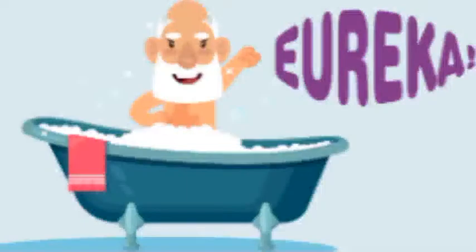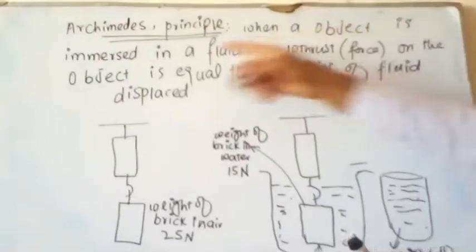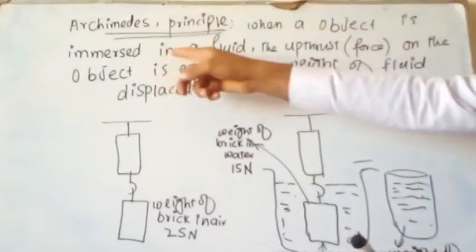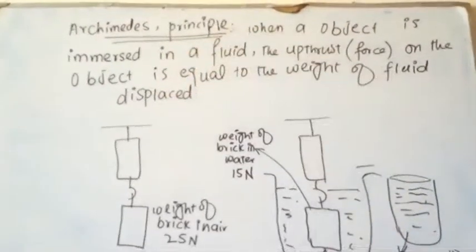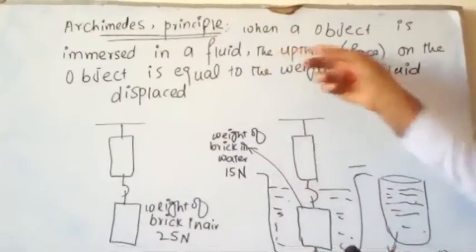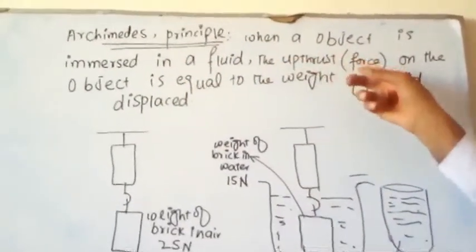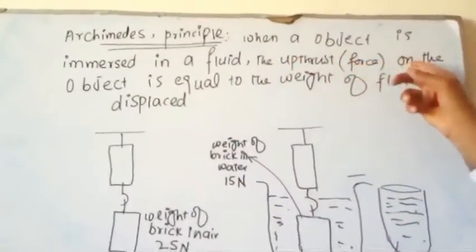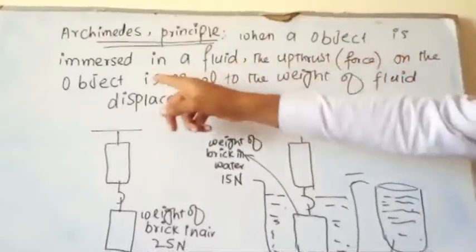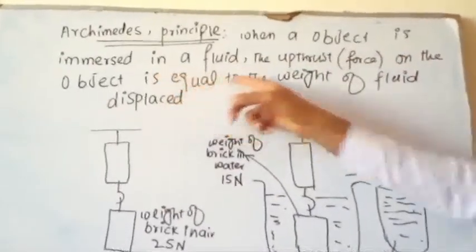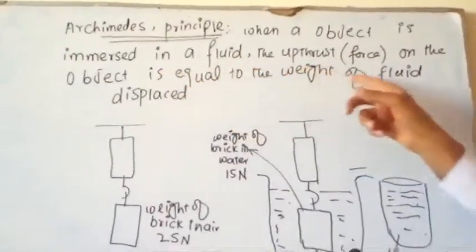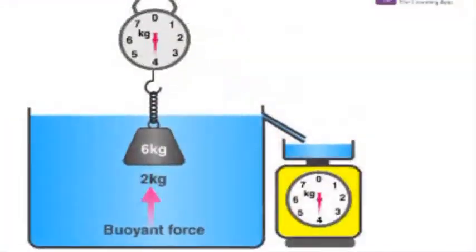Today our topic is Archimedes' Principle. When an object is immersed in a fluid, the upthrust force on the object is equal to the weight of the fluid displaced.